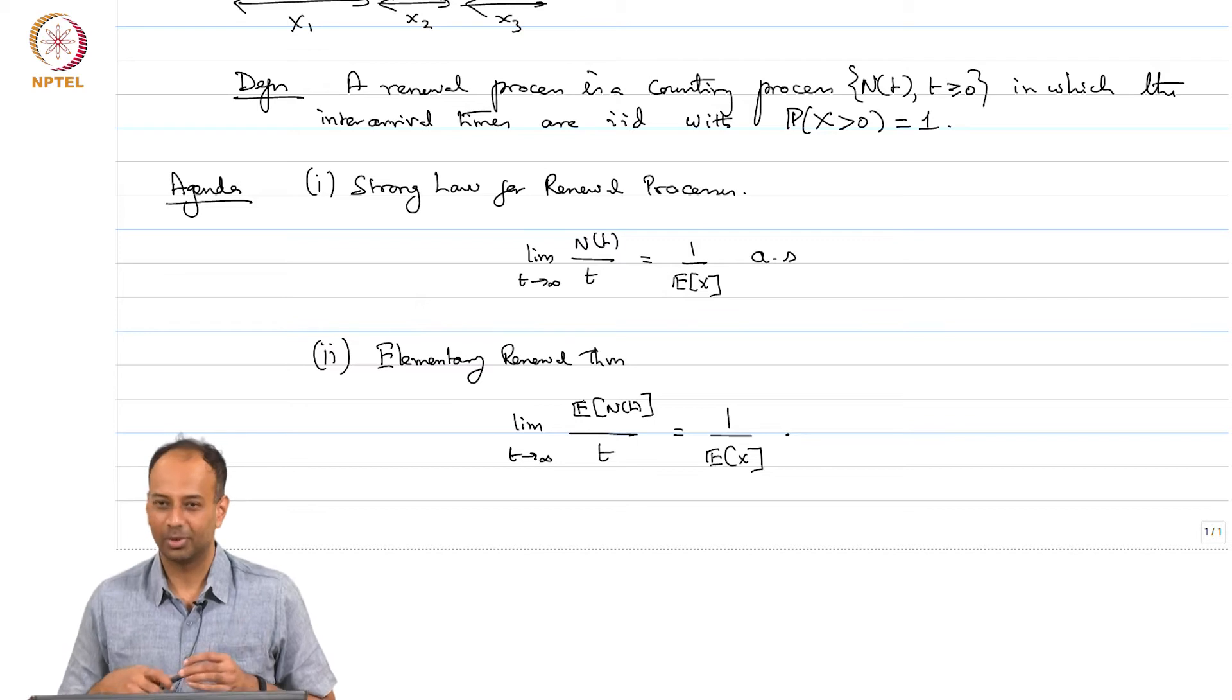You might think that if NT over t converges almost surely to 1 over expectation of X, what is the big deal in saying that the expectation of NT over t converges to 1 over expectation of X. Well intuitively of course, you would expect this, I mean you will not be shocked that this is true, but it turns out that the elementary renewal theorem is a very different statement. It is not in any way a direct consequence of strong law for renewal process. In fact, the elementary renewal theorem the proof is not very elementary.